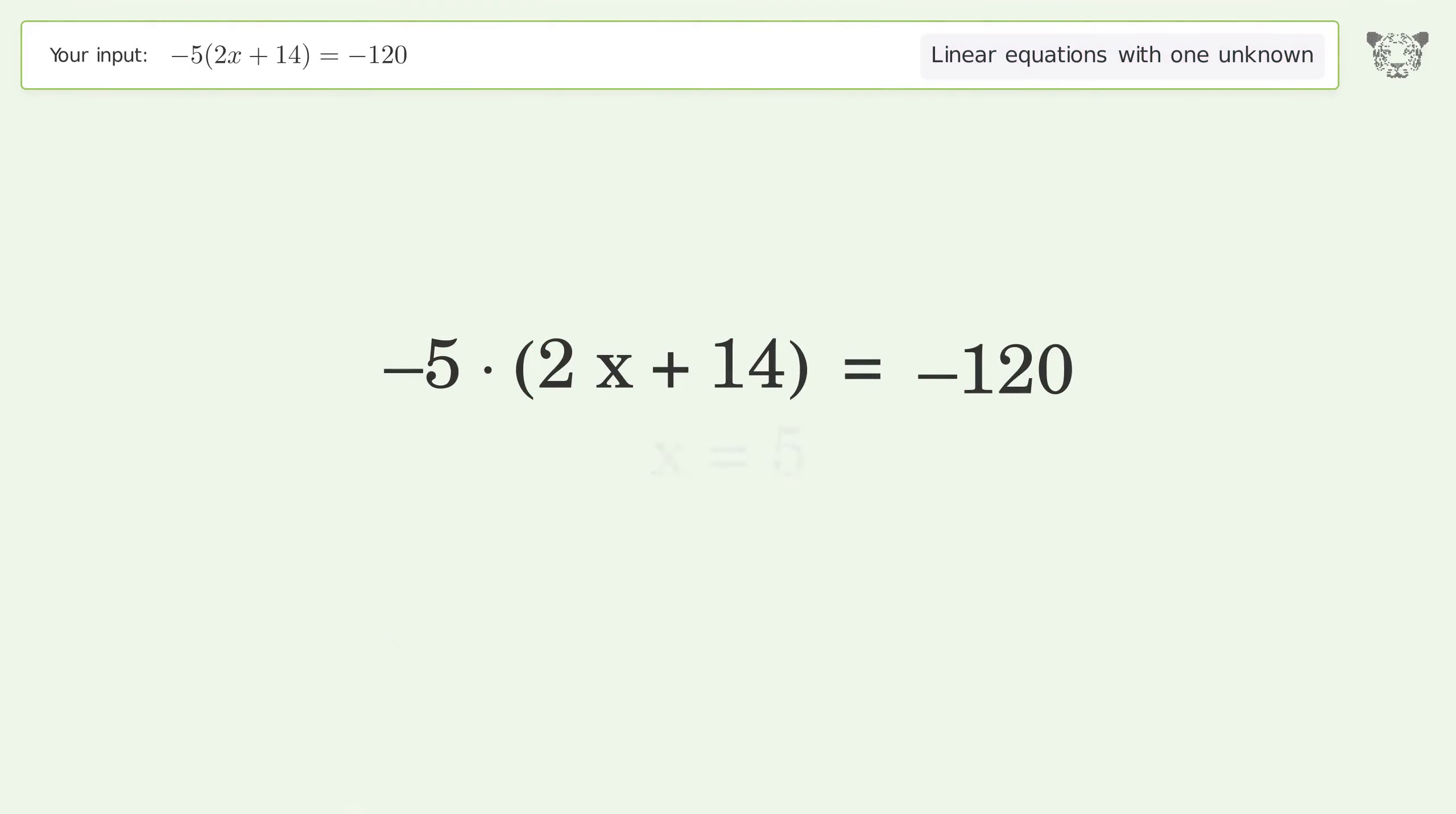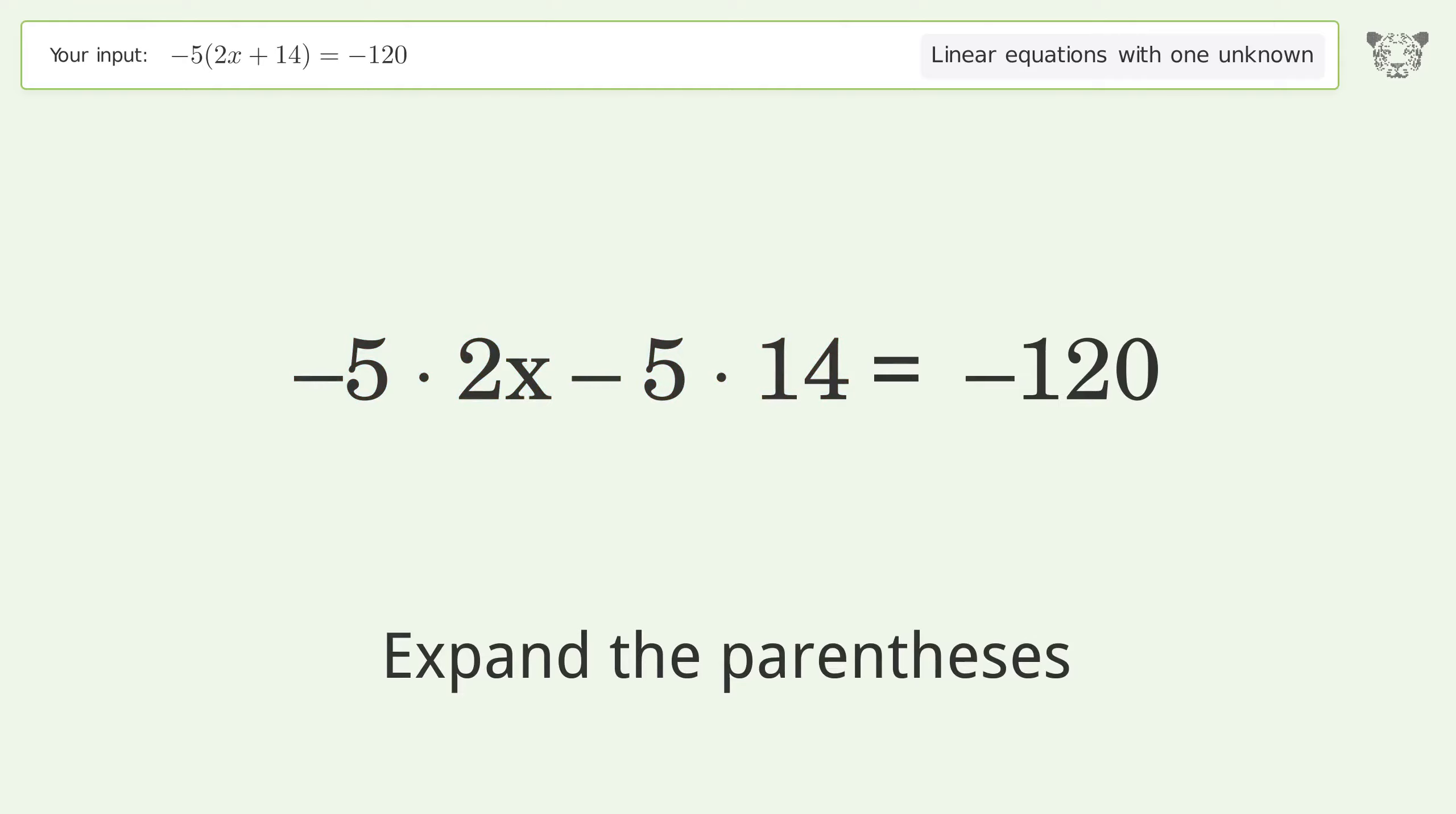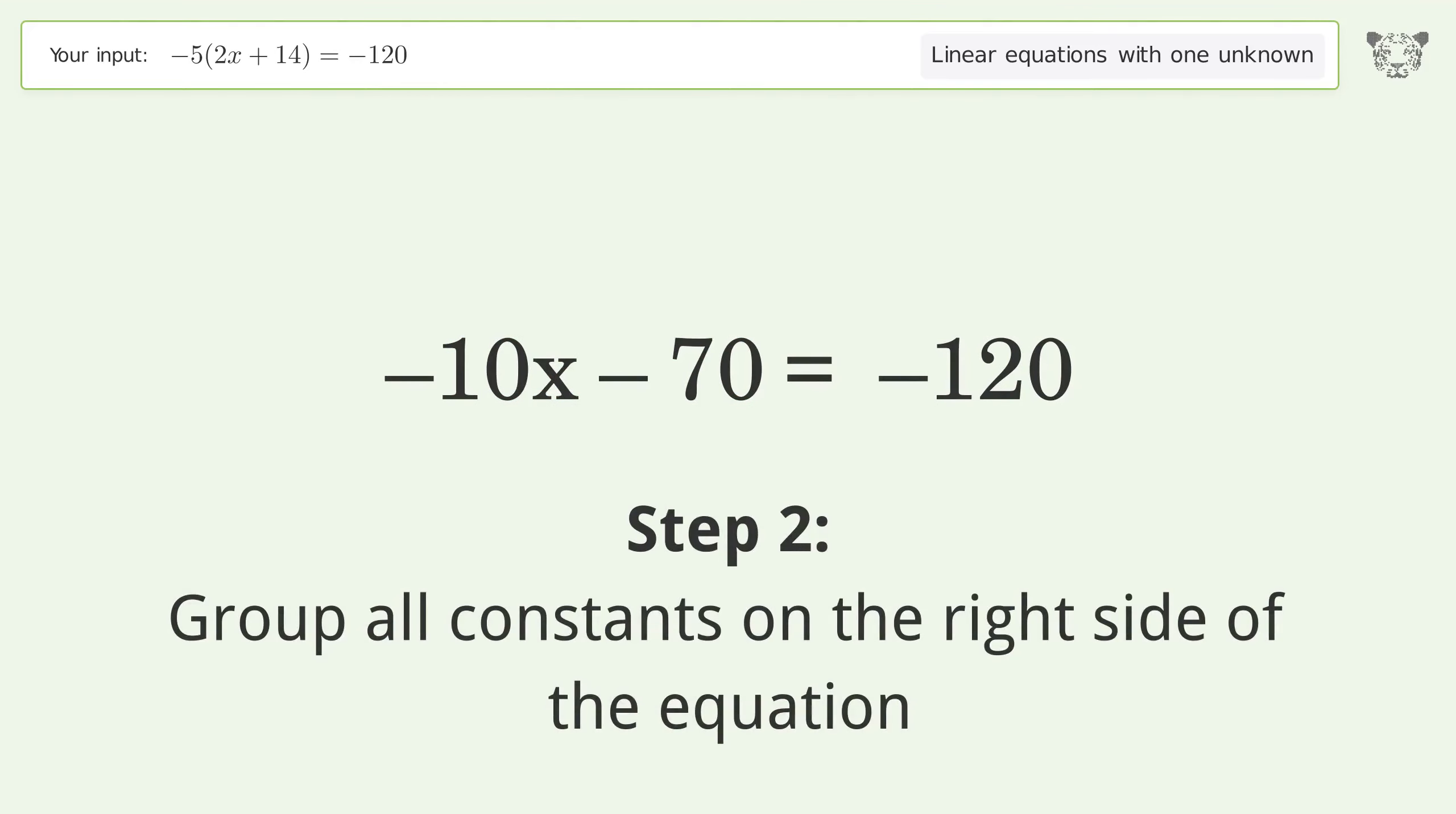You asked Tiger to solve this. This deals with linear equations with one unknown. The final result is x equals 5. Let's solve it step by step. Simplify the expression, expand the parentheses, multiply the coefficients, simplify the arithmetic.